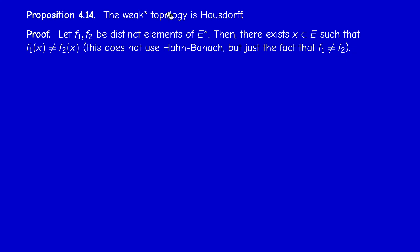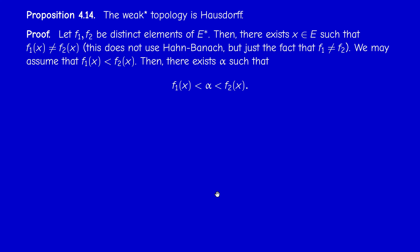So f₁(x) ≠ f₂(x); we can assume f₁(x) < f₂(x), and we pick a number α strictly between them. Recall that x ∈ E, f₁ ∈ E*, and f₁(x) is a real number — this is just an inequality in ℝ.